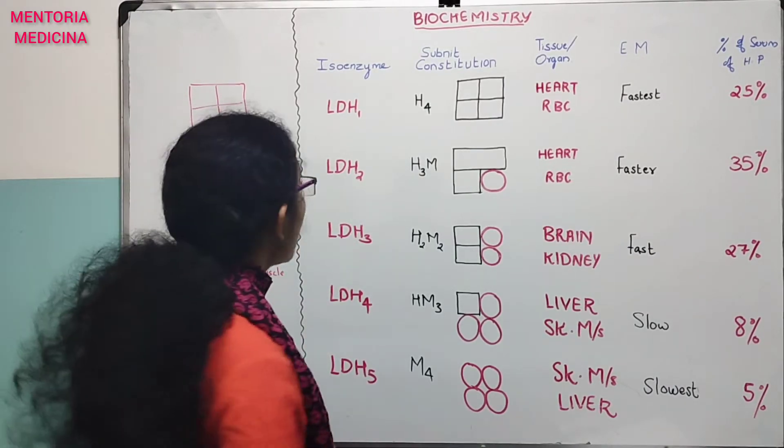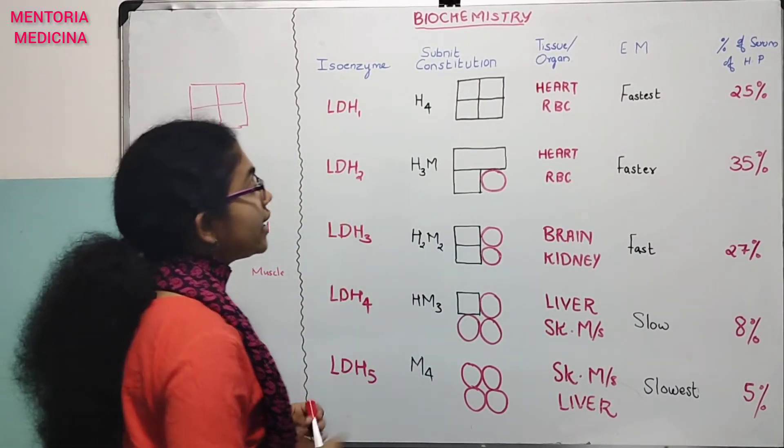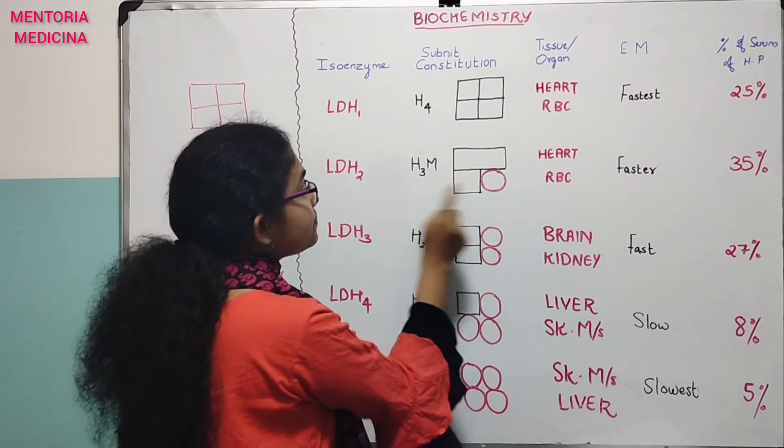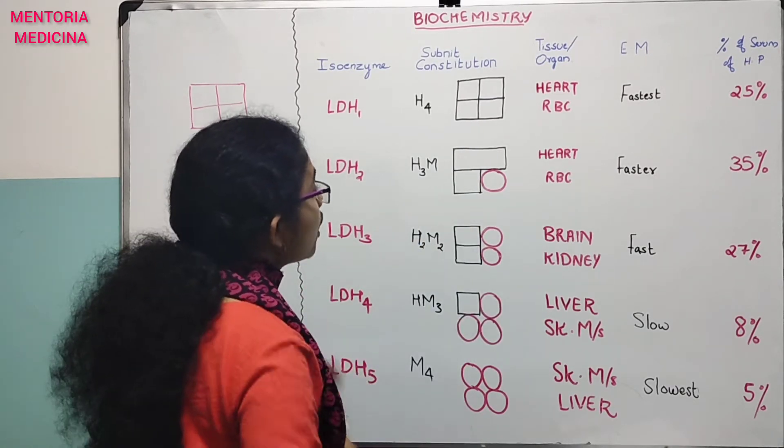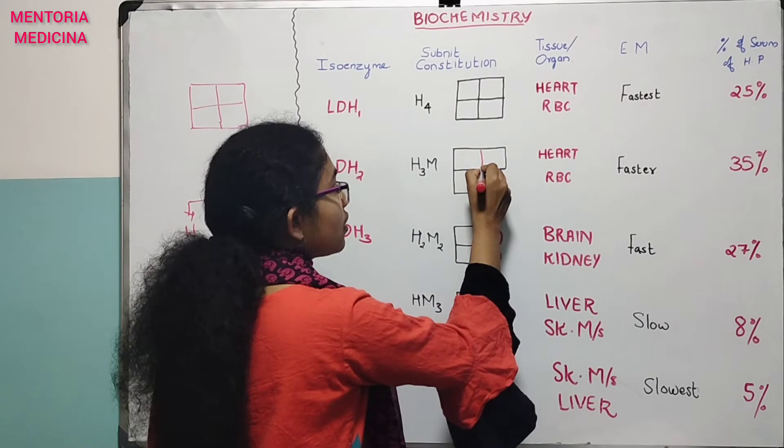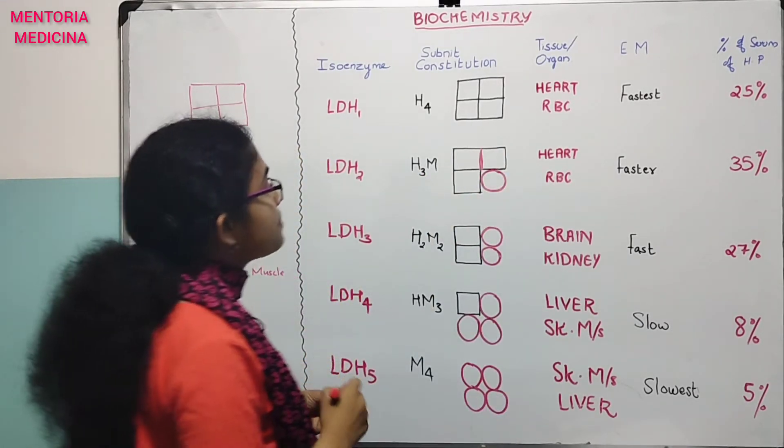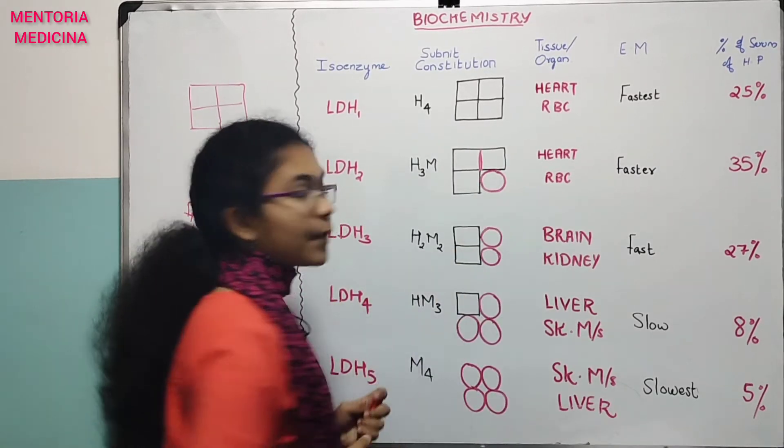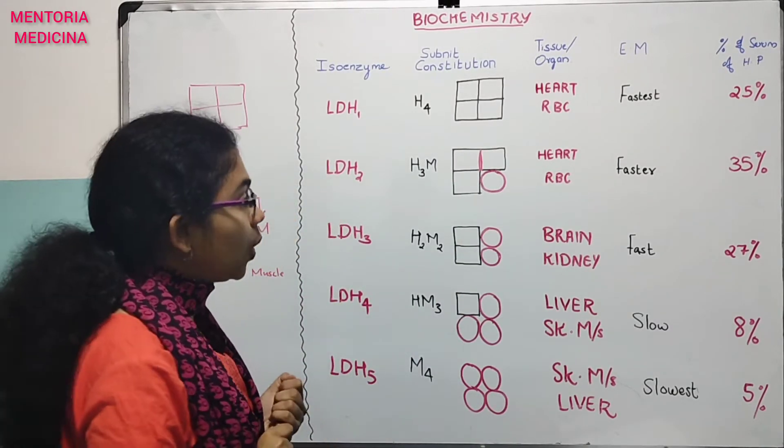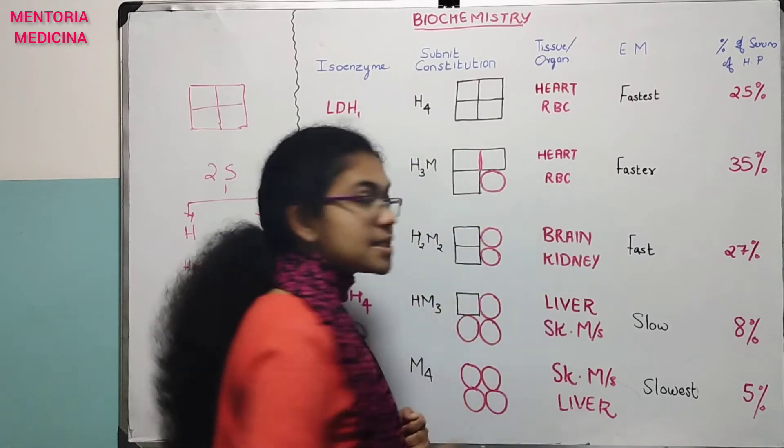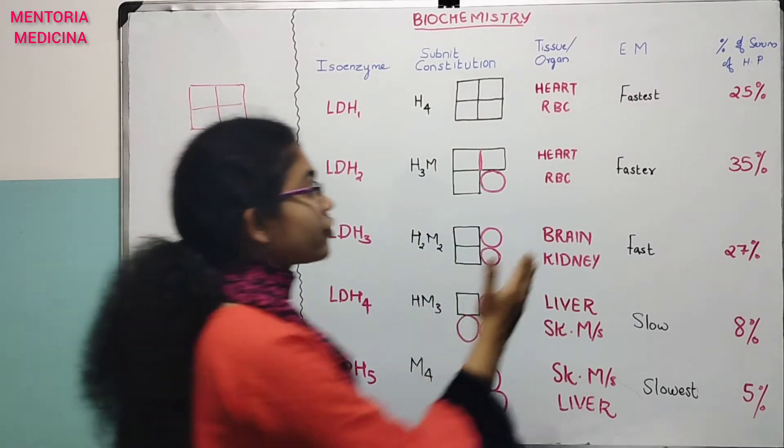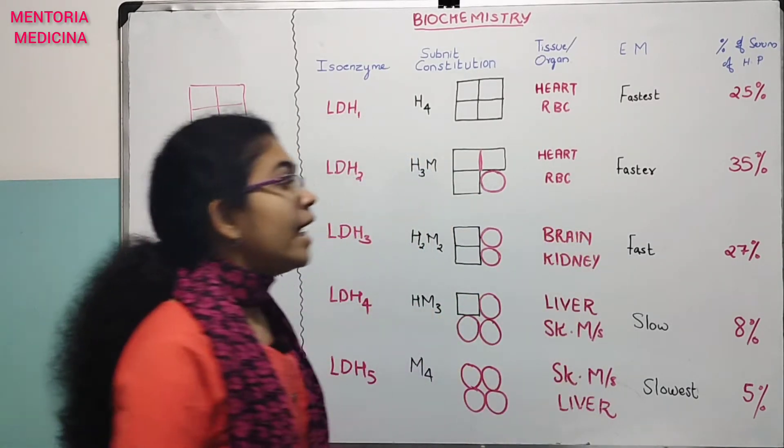LDH2 is three H subunits and one M subunit. Electrophoretic mobility: fast. Healthy serum is 35%.